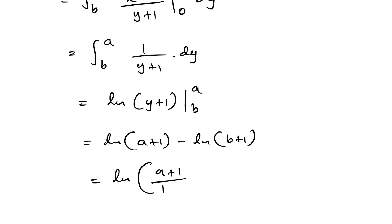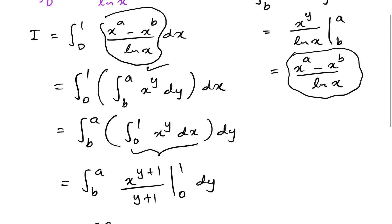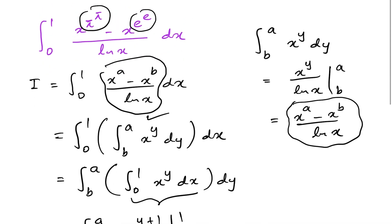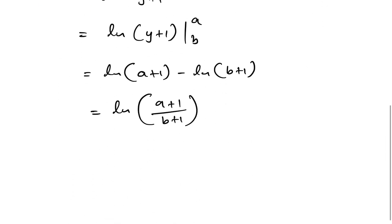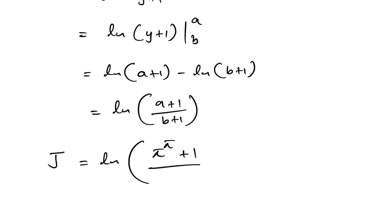This is the answer for I in the general case. For our specific integral J, substituting back a = π^π and b = e^e, we get J equals natural log of (π^π + 1) over (e^e + 1). This is the final answer. If you like this type of video, please subscribe to this channel. Thank you for watching.